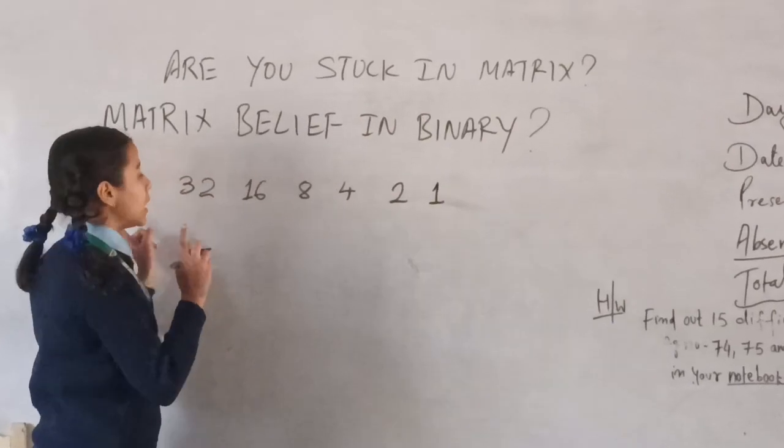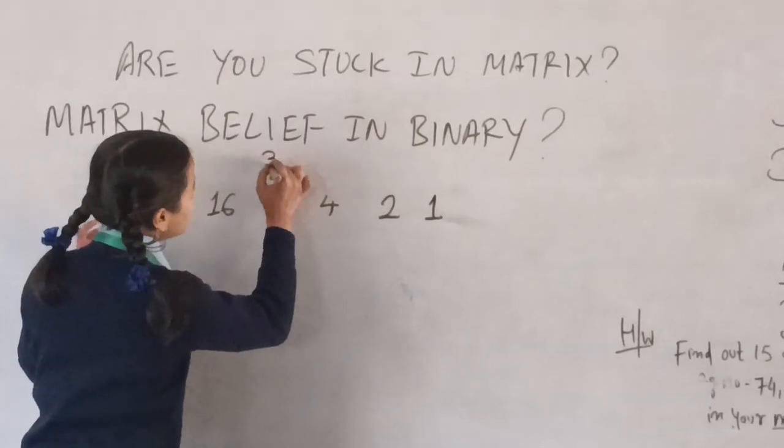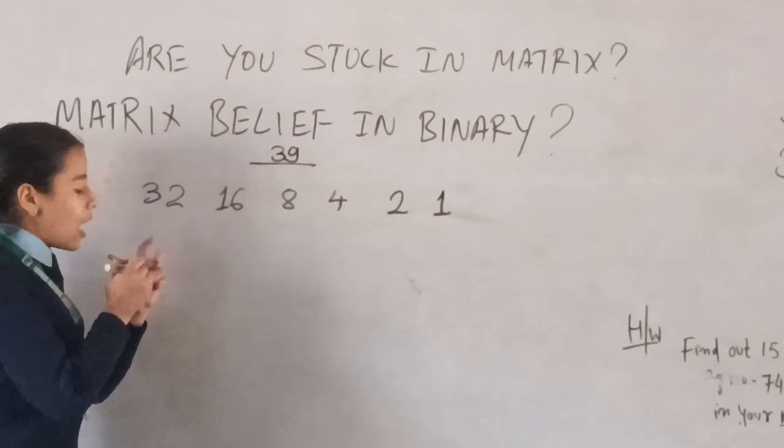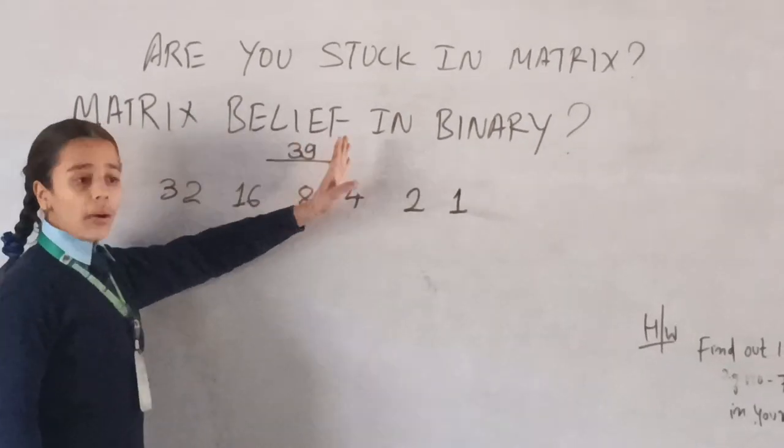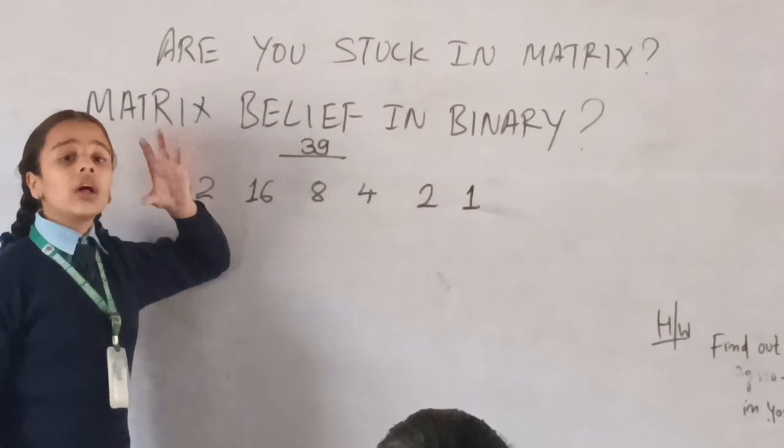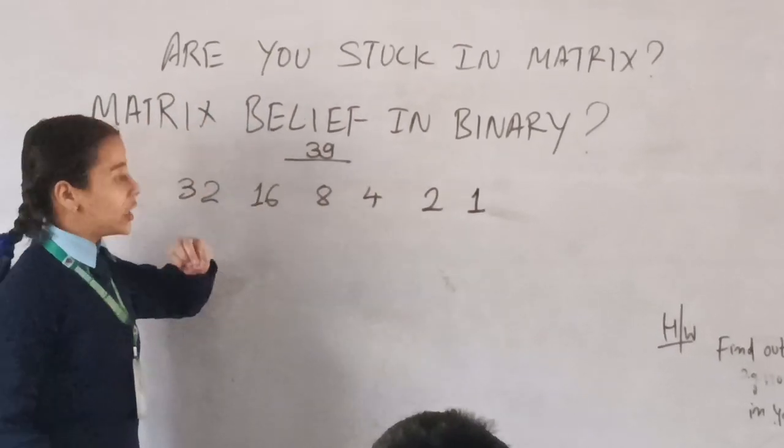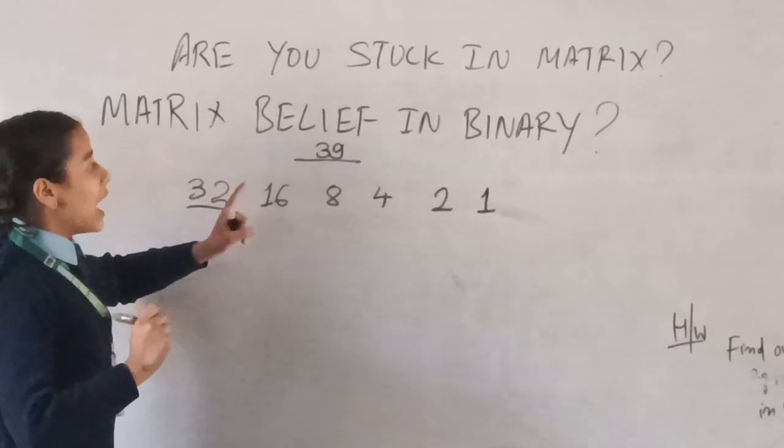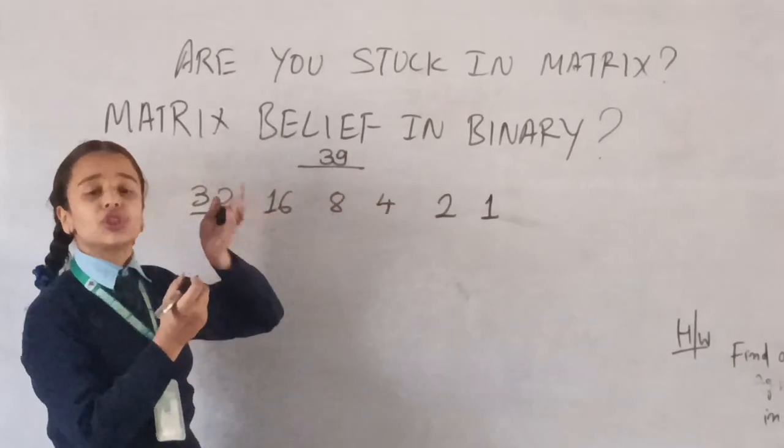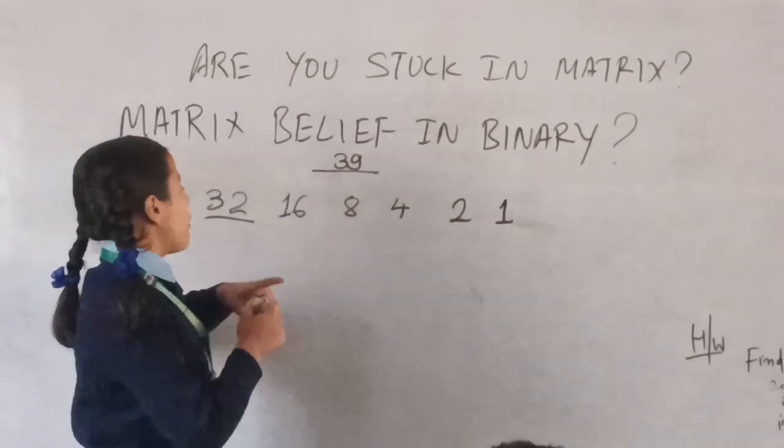Talking about the course, we are going to be solving this problem. We will take the number 39. If we have to find it, we have to find the digit that is smaller than 39. So we will align the 32. Now 32 plus how much is 39 we have to find.